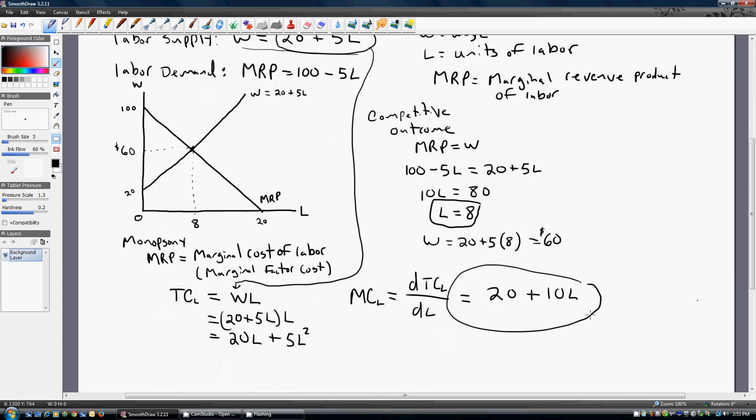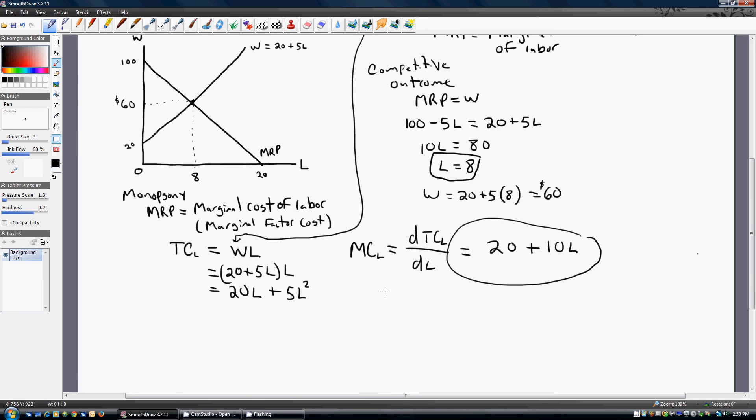Okay, now we're ready to basically finish up this problem by setting the firm's marginal revenue product, set that equal to the marginal cost of labor. So the marginal revenue product is 100 minus 5L equals 20 plus 10L. Solving for L, we get L equals 5.33. So that is how many workers a monopsonist will hire.